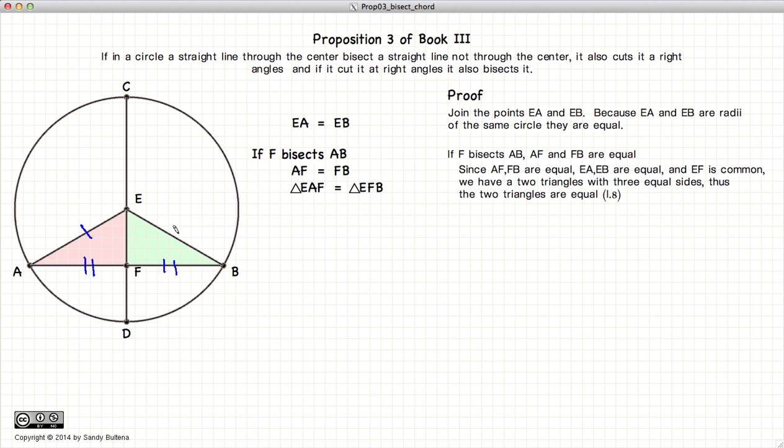we have AF is equal to FB, AE is equal to EB, and EF is common. So, we have two triangles with side, side, side equal,